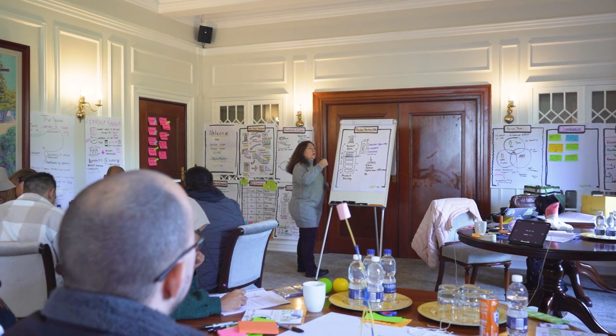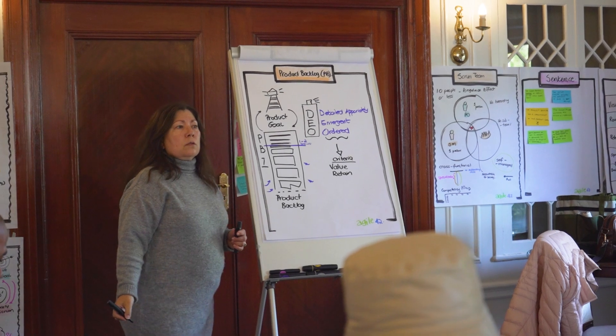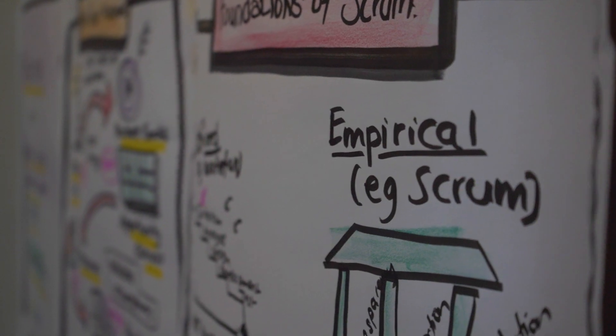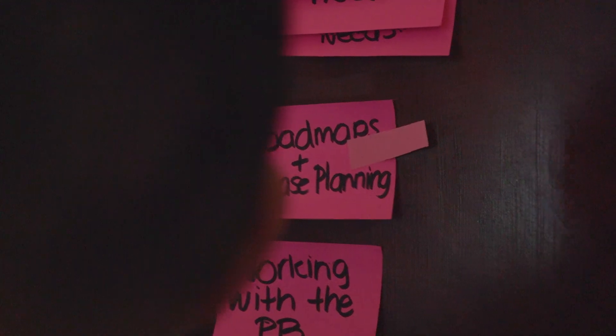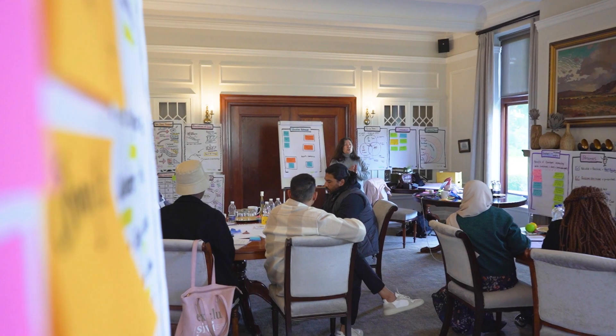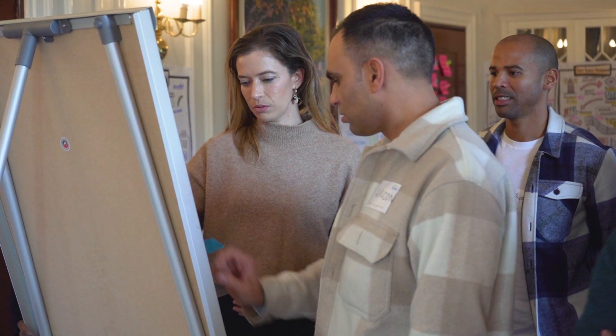We know why we are doing something — the vision. We know what we are doing — the Product Goals, the opportunities. We know who we're doing it for. Now we need to figure out the when. So we need to do an element of road mapping, and the Product Owner course is going to show you how to create a Product Roadmap, and from that Product Roadmap into the creation of a Product Backlog. From the Product Backlog, we'll teach you how to create user stories and how to do backlog refinement.